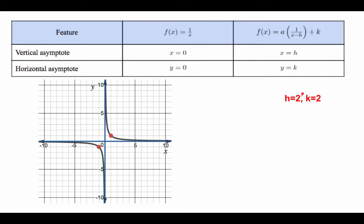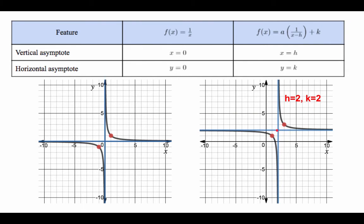Now let's talk about the transformation with h = 2 and k = 2. In terms of shift, the origin moves to the right by 2, then up 2 — right there. That is the intersection of the two blue lines, which represent the vertical and horizontal asymptotes. From that new center, we plot 1, 1 and negative 1, negative 1, and then draw the hyperbola shape.